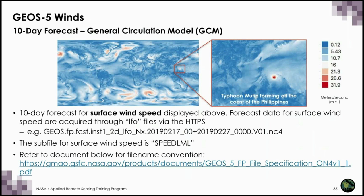This is a plot of one of the downloaded data files — a 10-day forecast of surface wind speed displayed in meters per second. This is a global file, and on the right is a zoomed image of Typhoon Wutip, which at the time was forming off the coast of the Philippines.